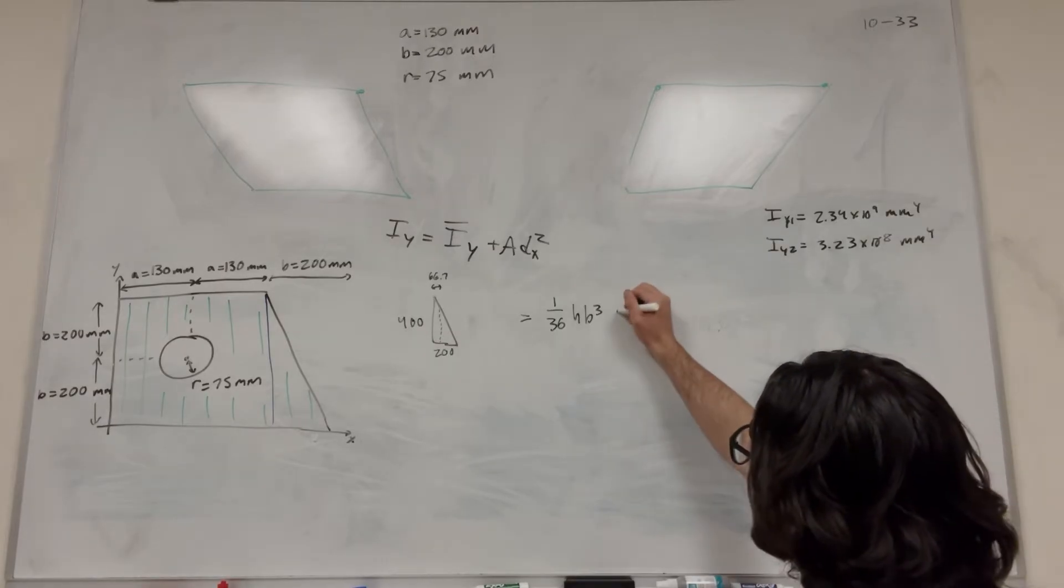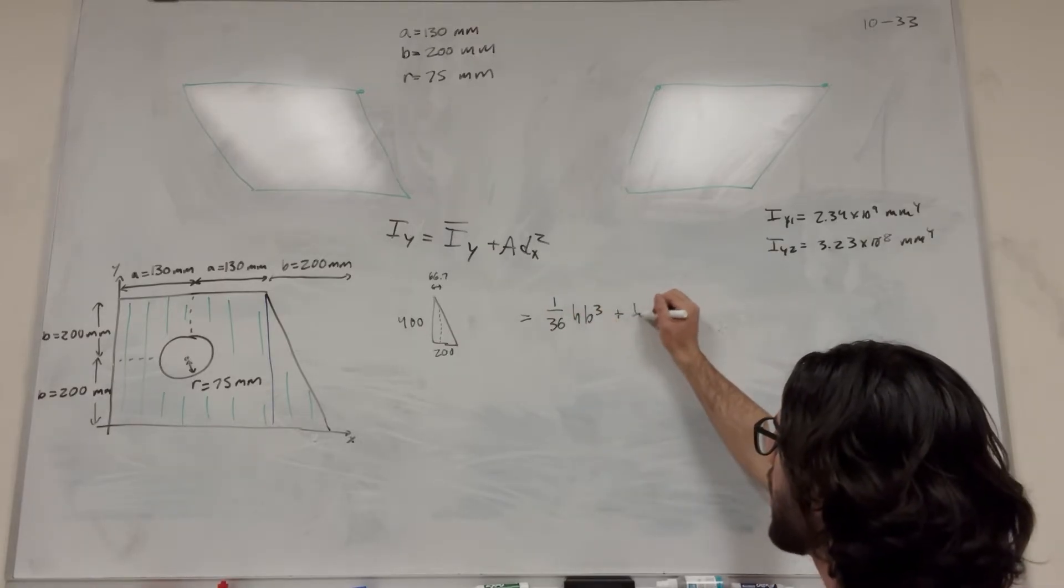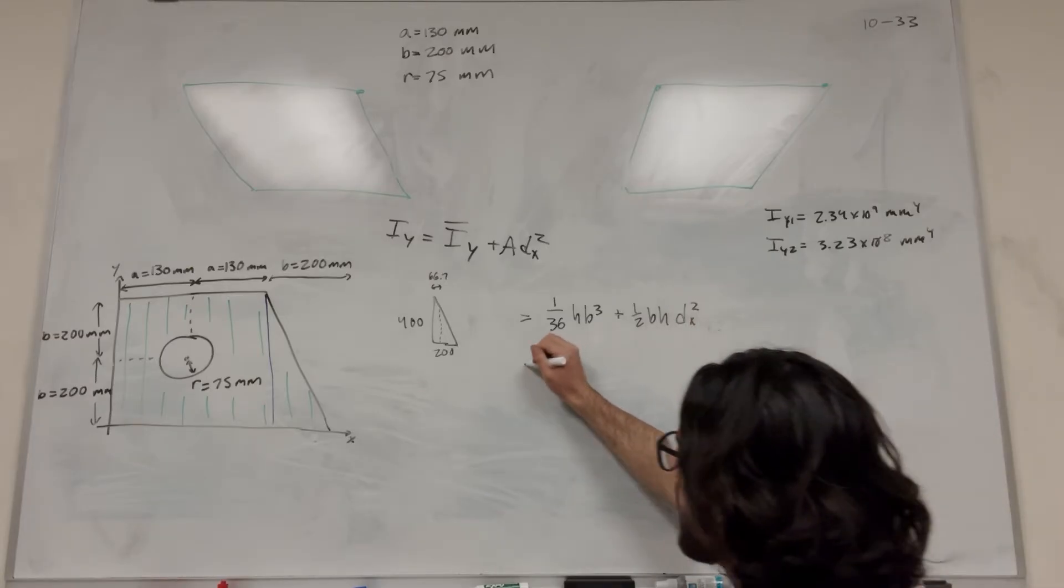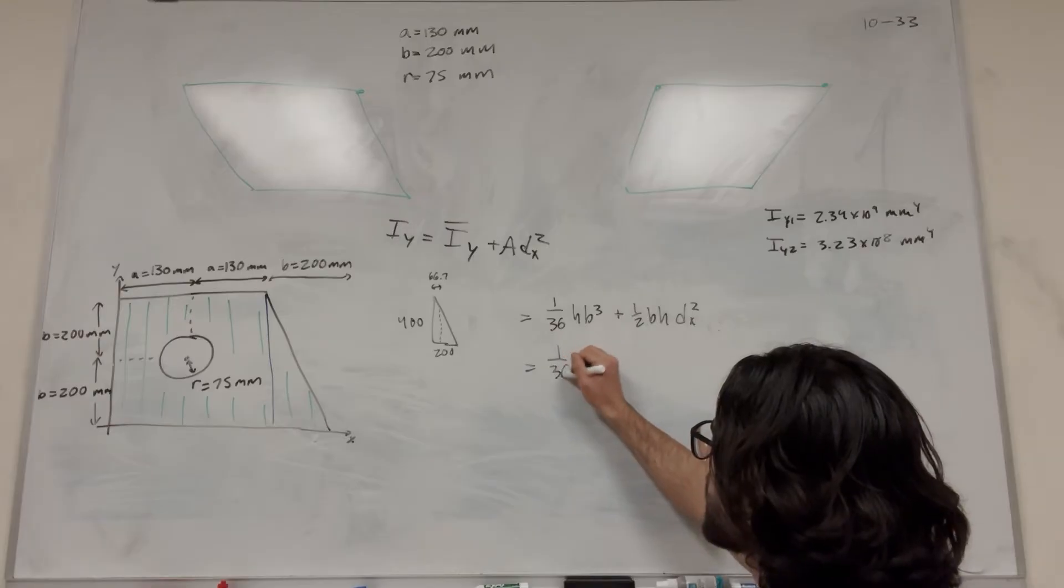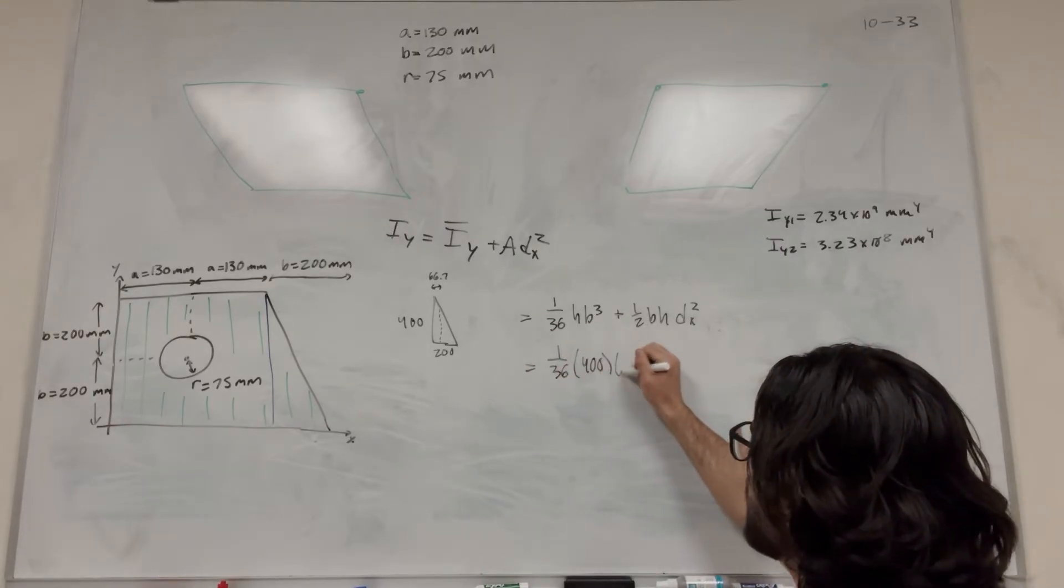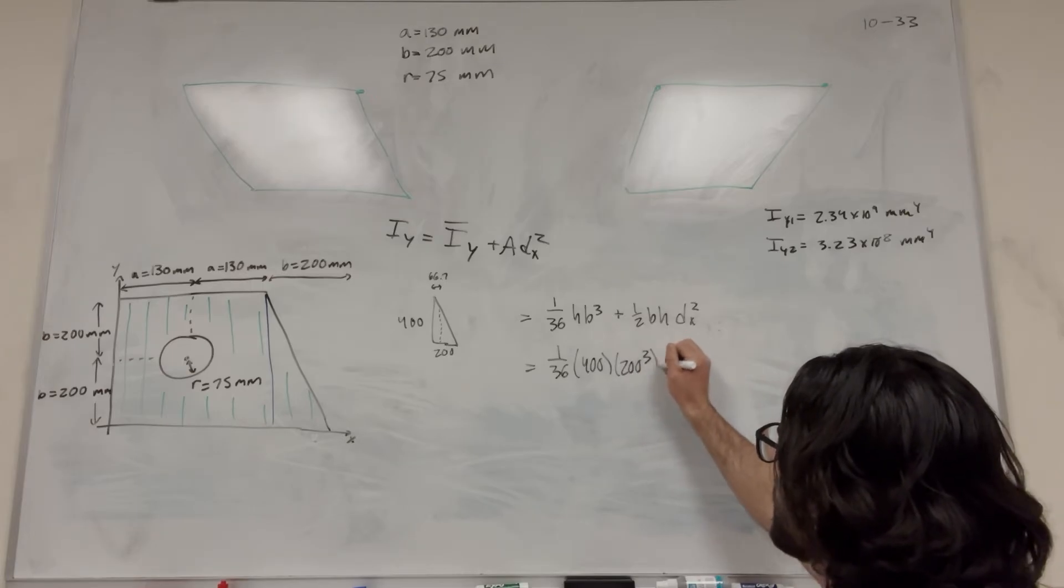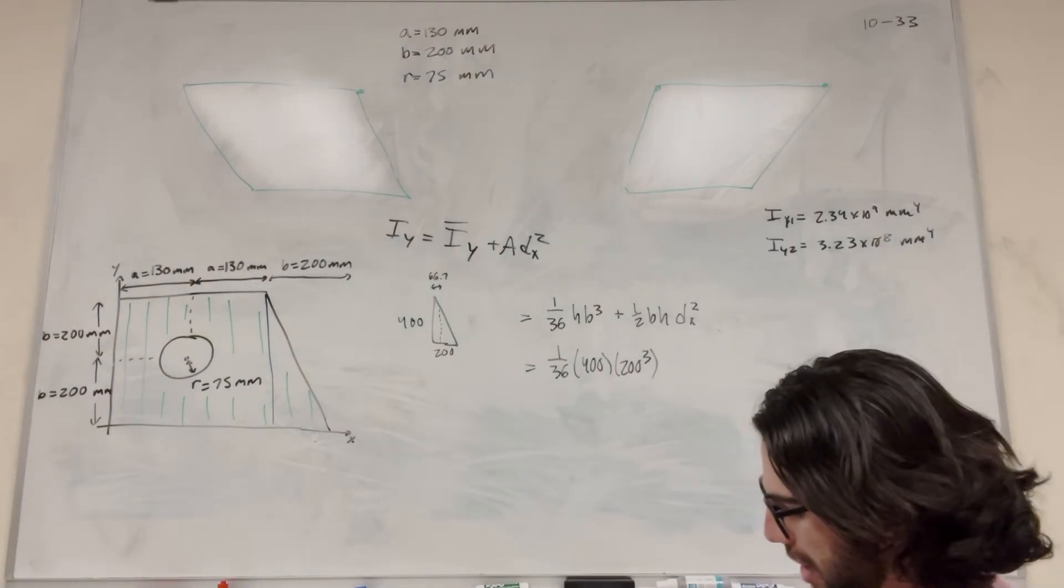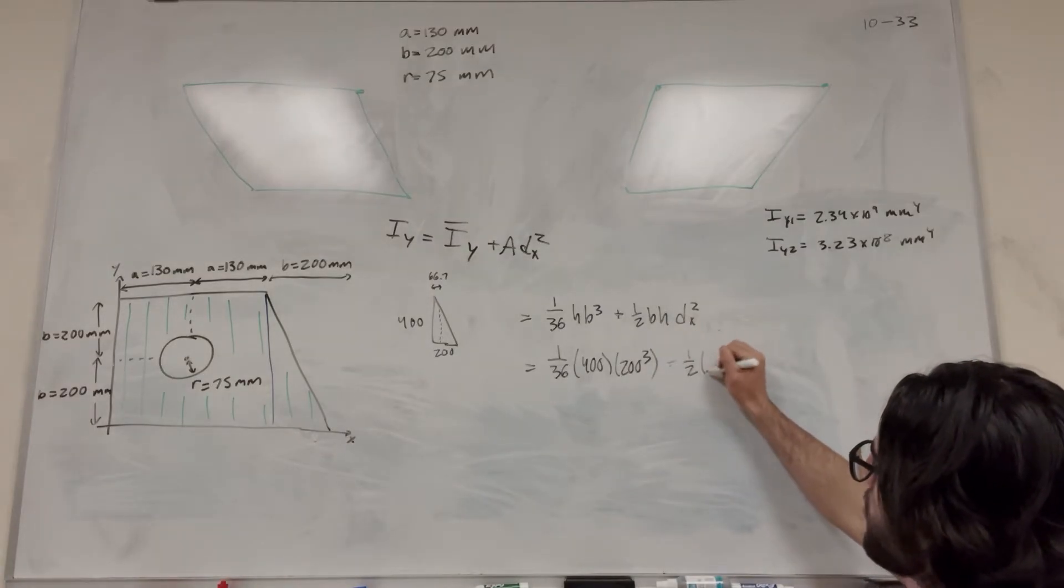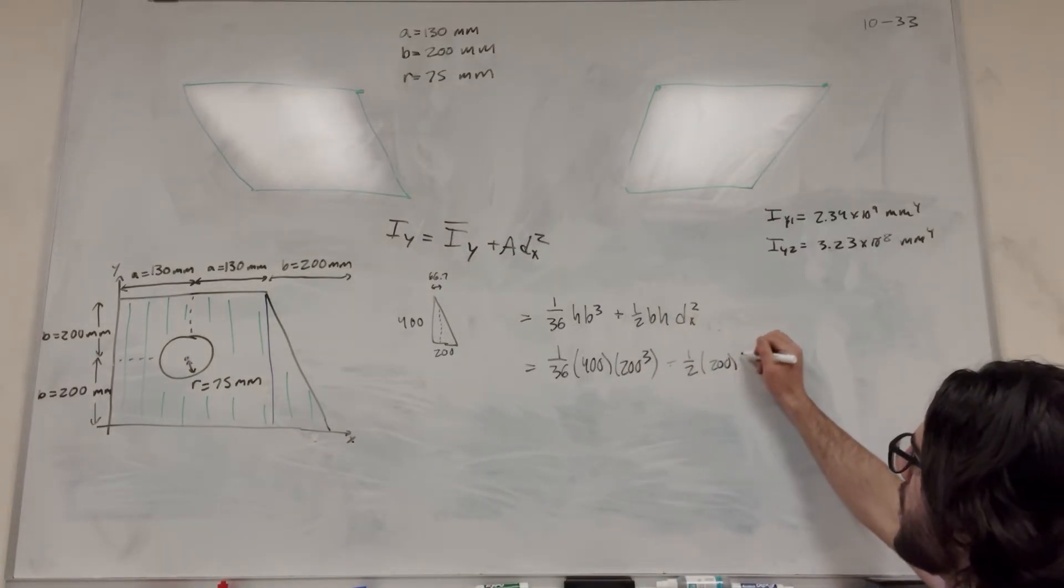And then we're going to go ahead and do the area. So the area, of course, is 1 half base times height. And then distance in the x squared. Let's plug in our numbers here. So 1 over 36. The height of our thing is 400. The base is 200 cubed. Make sure you get your height and base right. And then 1 half. Base is 200. Height is 400.